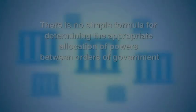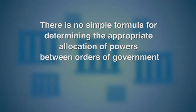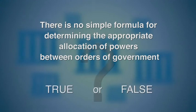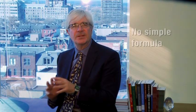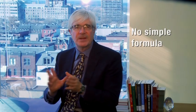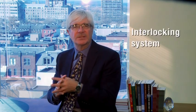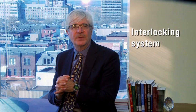Constituent unit governments — such as states, provinces, or whatever they're called — normally have responsibility for matters such as education and healthcare. Statement two: There is no simple formula for determining the appropriate allocation of powers between orders of government. That is true. While there are some patterns, there is also great variety. Some countries use an interlocking system requiring great cooperation — Germany and South Africa are examples. Others use an asymmetrical pattern — Canada is an example with regard to Quebec in particular.